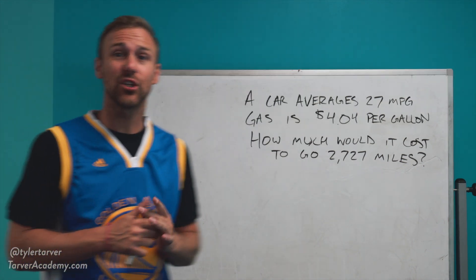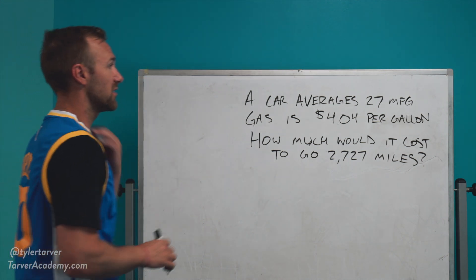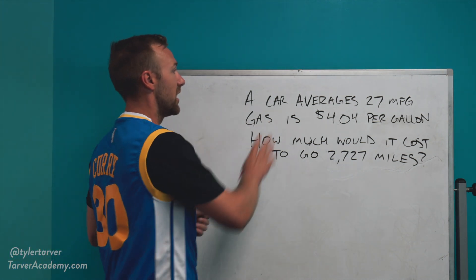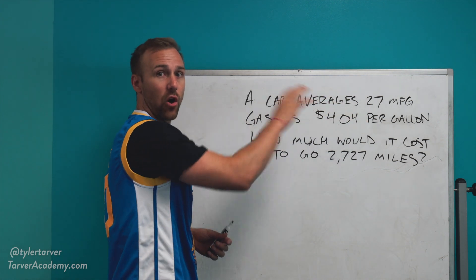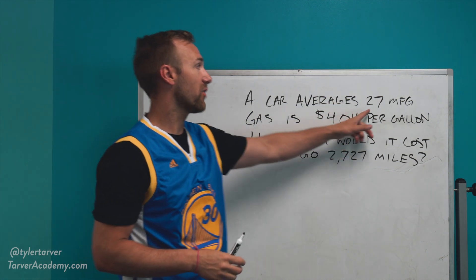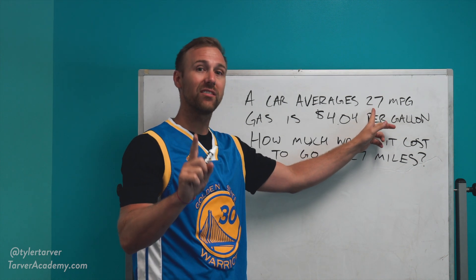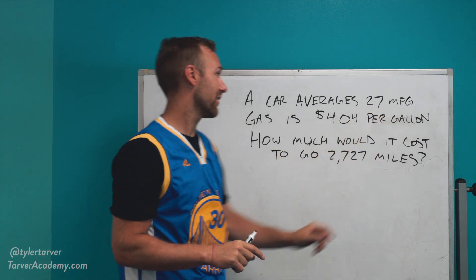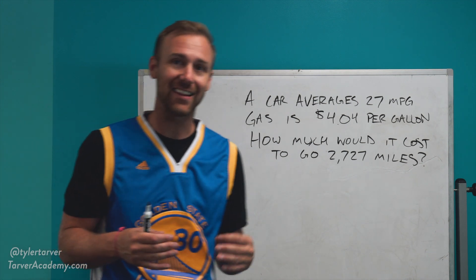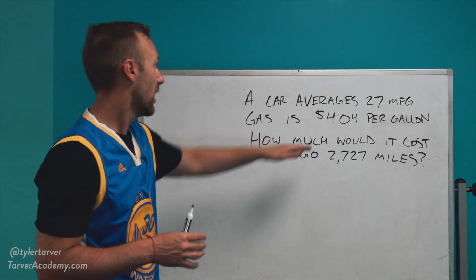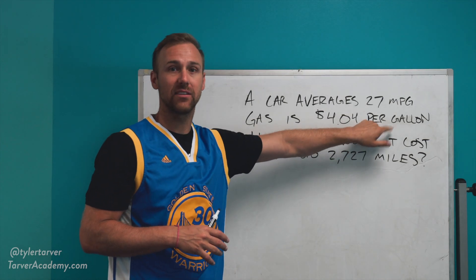This is going to take us two steps — hopefully when you worked it yourself, you had two steps. The first thing we have to figure out is we know how many miles per gallon the car averages. So for every one gallon we're using, we're going to get 27 miles out of it. We have to find out how many gallons we're going to use. We can't use the money part until we know how many gallons we have.